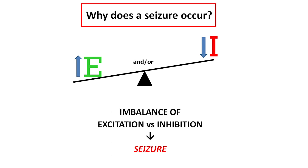Why does a seizure occur? We like to think about it as a teeter-totter — a balance between excitation and inhibition in the brain. If the balance is disturbed, a seizure could happen. This imbalance would occur if there was too much excitation and/or not enough inhibition. Various cellular and synaptic factors will affect each of those two — the excitation and inhibition.